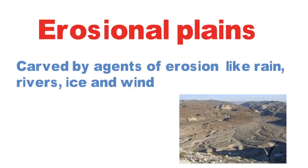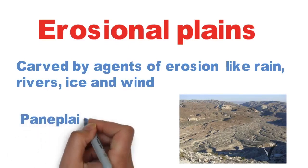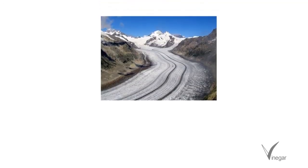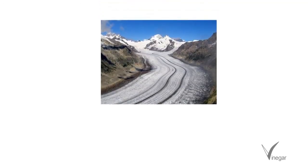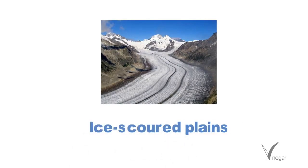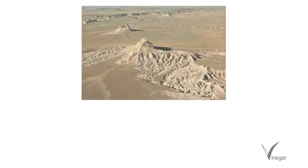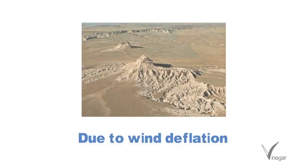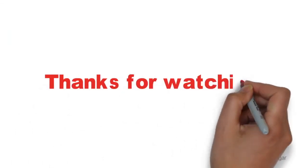These agents, over a period of time, smooth out the irregularities of the surface and create such plains. These are also called peneplains. In glaciated regions, glaciers and ice sheets also level out the land and create ice-scoured plains. In arid and semi-arid areas, plains are also created because of wind deflation.